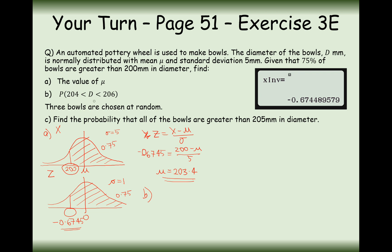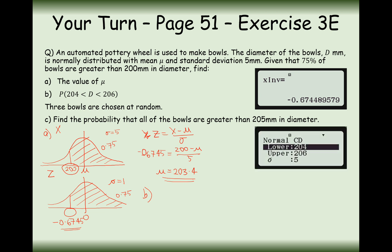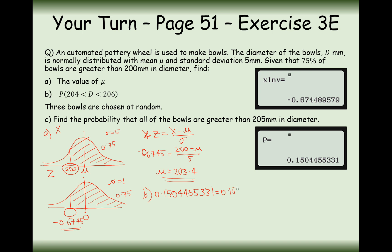Part B: find the probability that the diameter of a randomly chosen bowl is between 204 and 206 mm. Use the calculator with lower bound 204, upper bound 206, standard deviation 5, and mean 203.4. The answer rounded to three significant figures is 0.150.